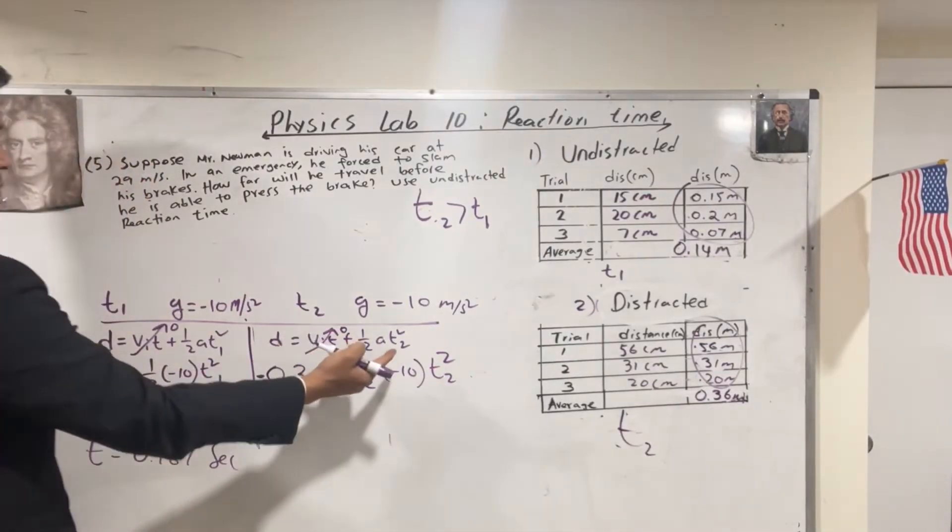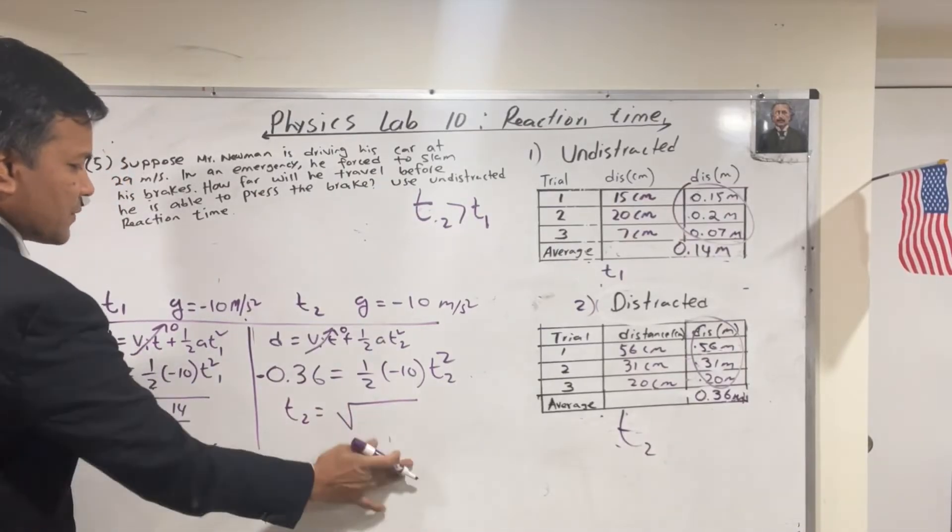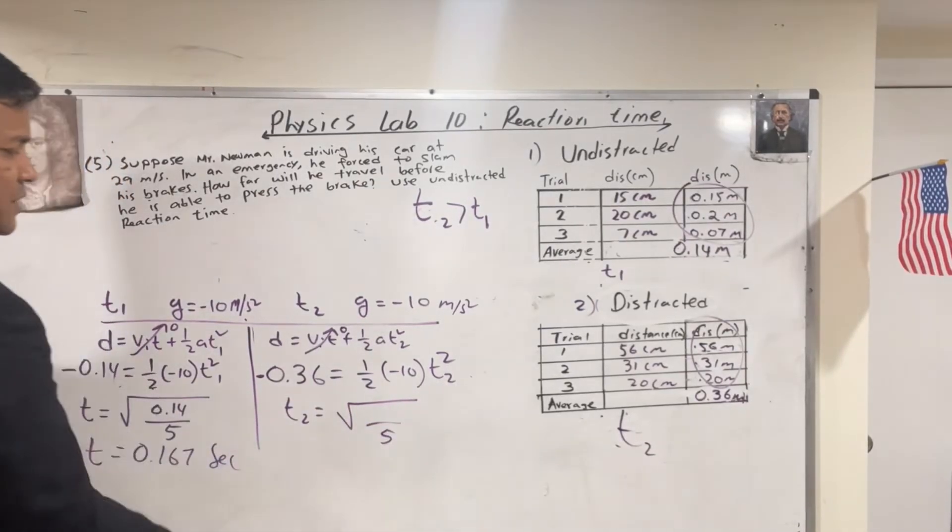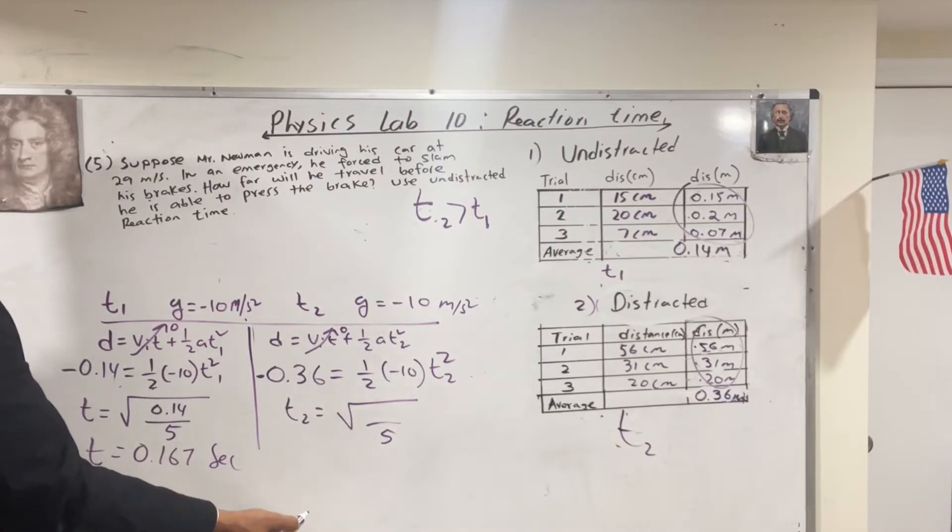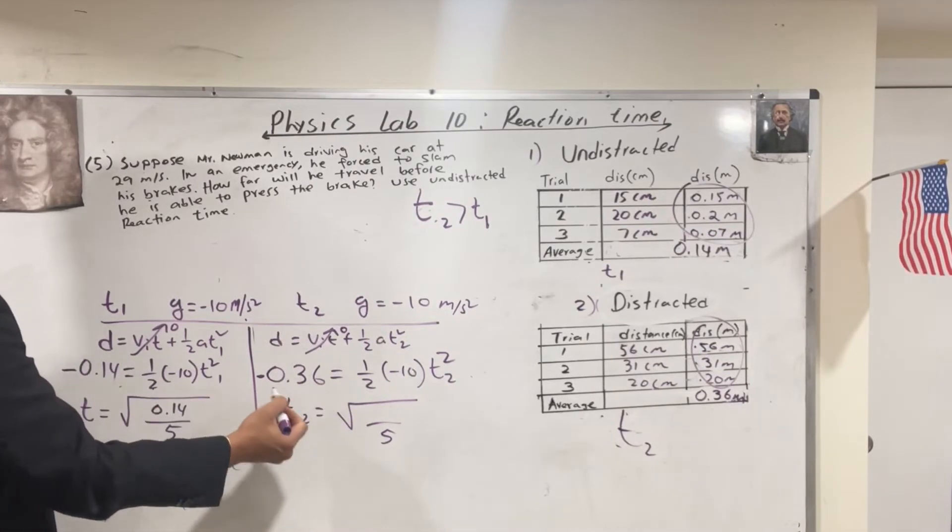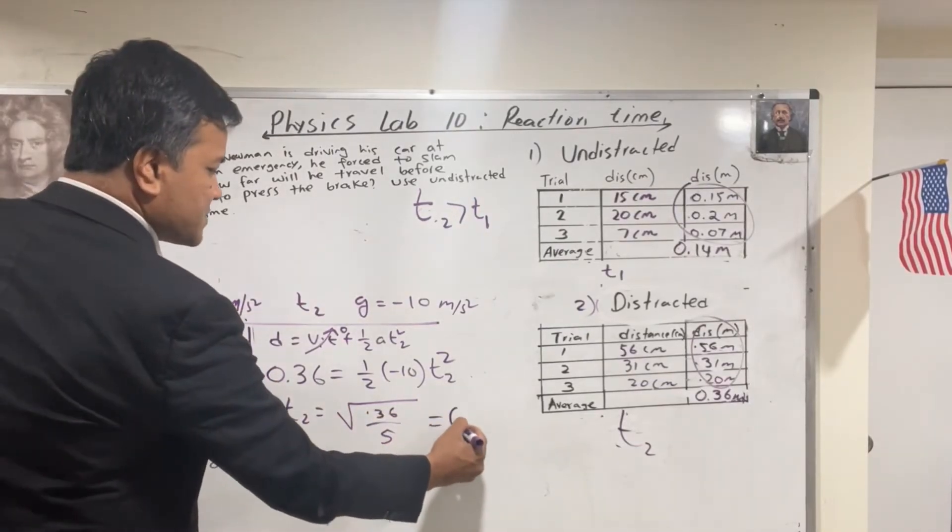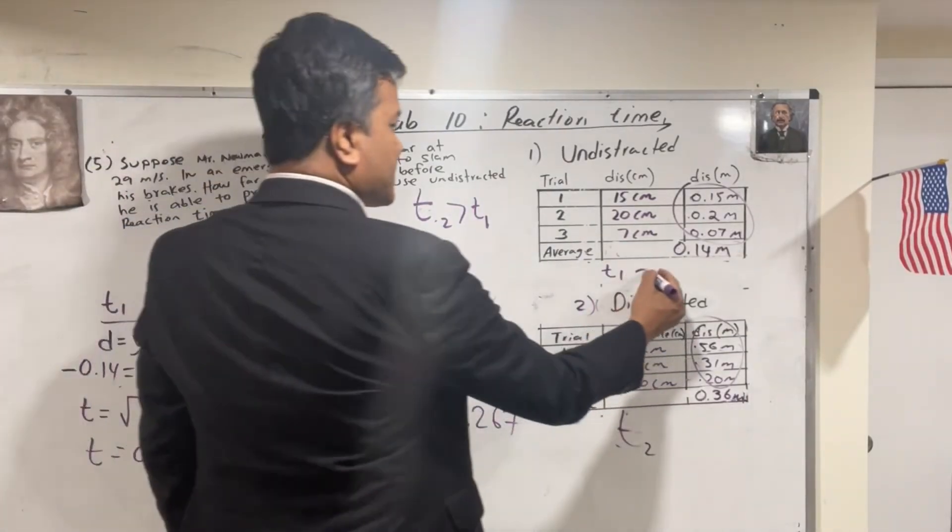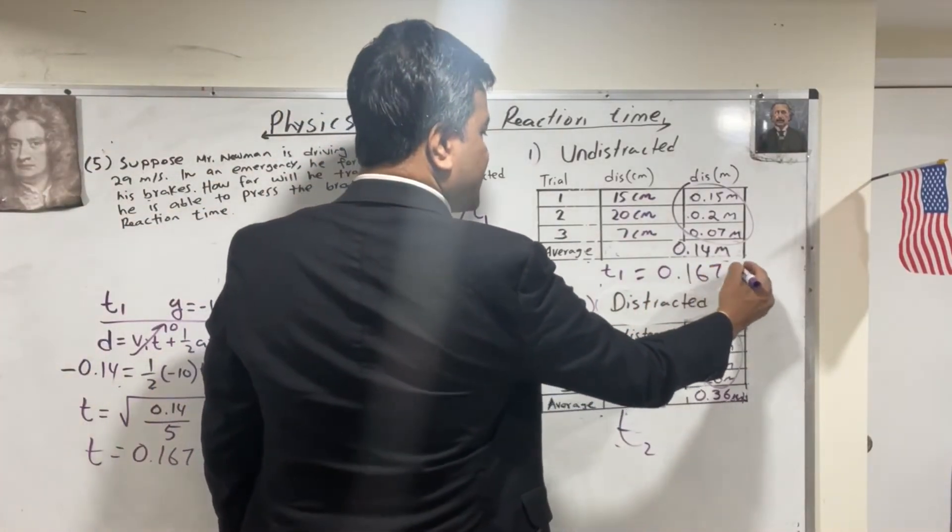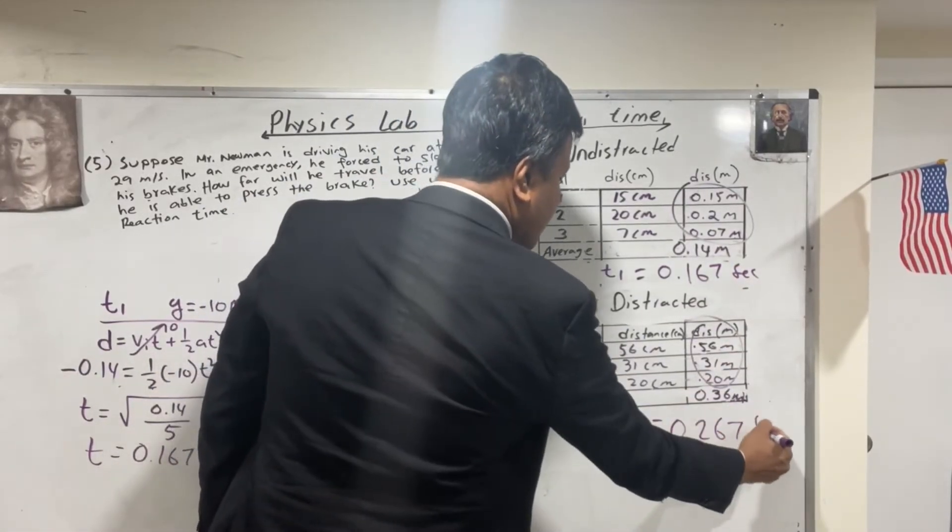Now, let's see how big T2 is. So T2 has to be equal to the 5 is on the bottom because 2 goes to 10 negative 5 times and then negative negative cancel. And then this is 0.36 and the T2 going to be 0.267. Okay. So T1 is 0.167 second and T2 is 0.267 second.